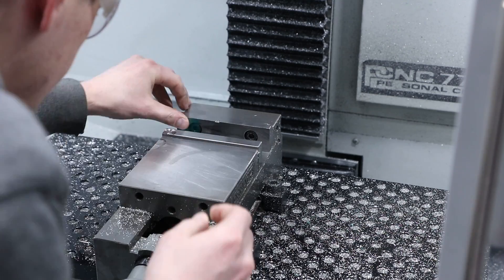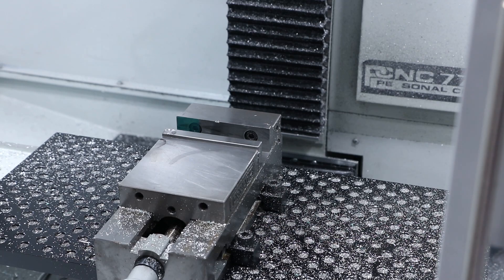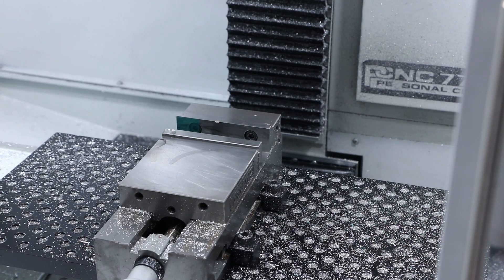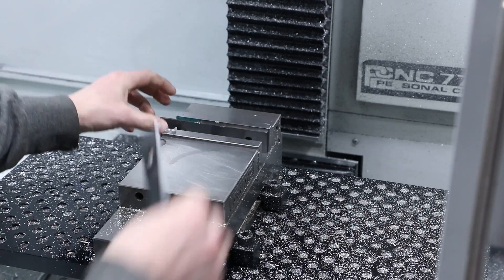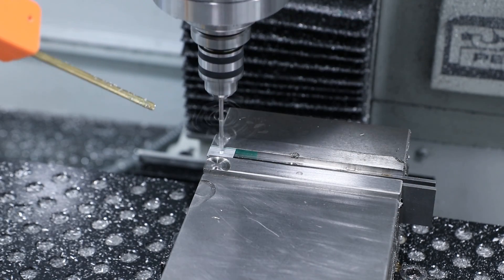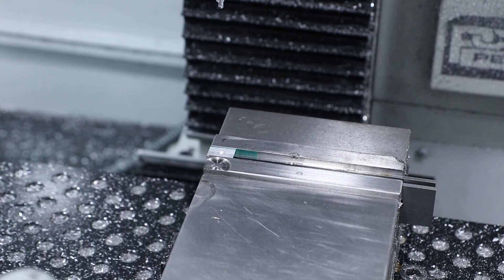For op two, we threw some of the high temp powder coat tape on our vice jaws. Just a nice way to prevent defects in your jaws, pressing themselves into and marring up the sides of our part. Quick spot drill and then a one eighth inch drill to get our hole for our cuff link stud.